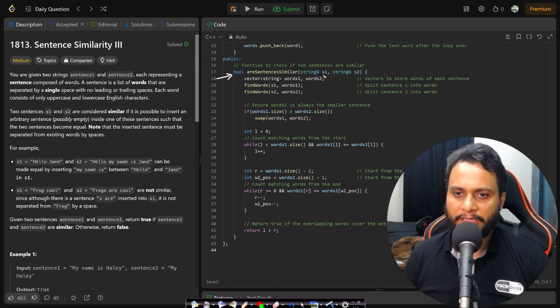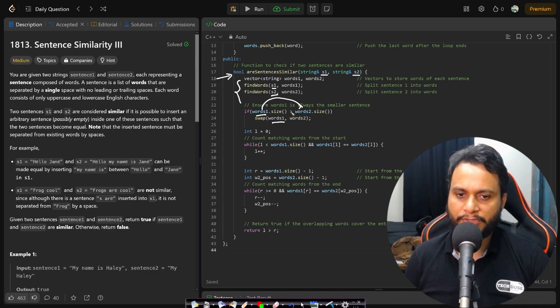Now in our main function, we are getting both strings s1 and s2, and we will get the word list for both string s1 and s2. Then we will make sure that words1 contains the lesser number of words so that I am always sure that words1 needs to be converted to words2. Now I am taking a left pointer and I am just finding out how many prefix matches are there, and then I am taking a right pointer and I am finding out how many suffix matches are there. And then if the prefix match plus suffix match is equal to the word length, that means words1.size, then we will return true, otherwise we will return false. So this is the entire idea.